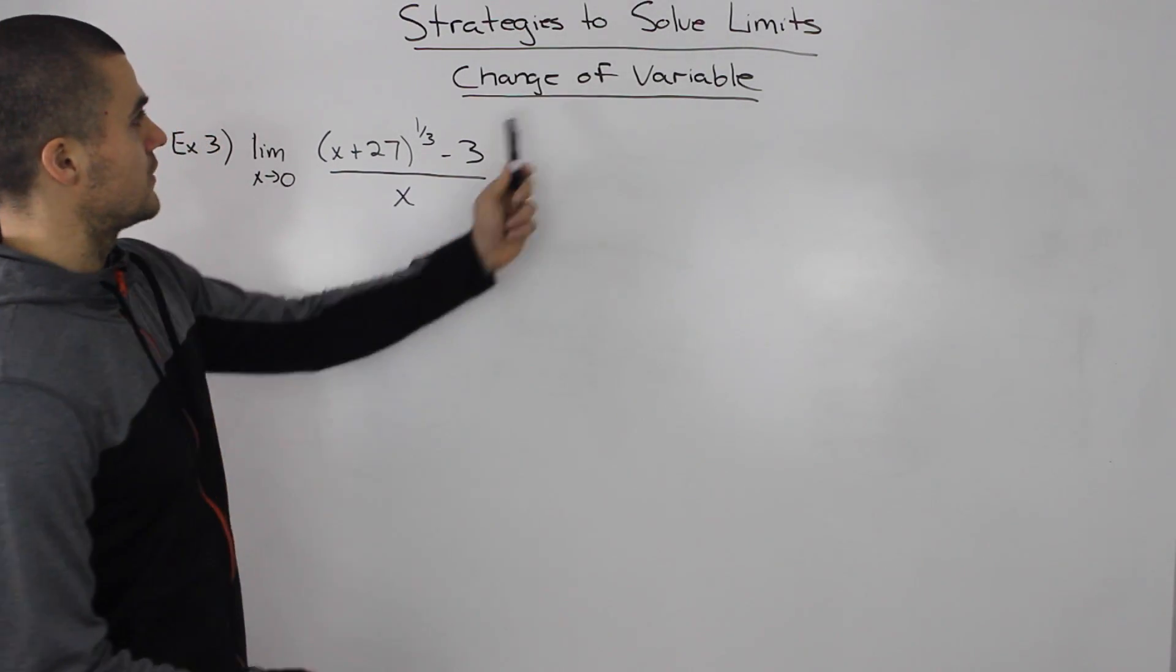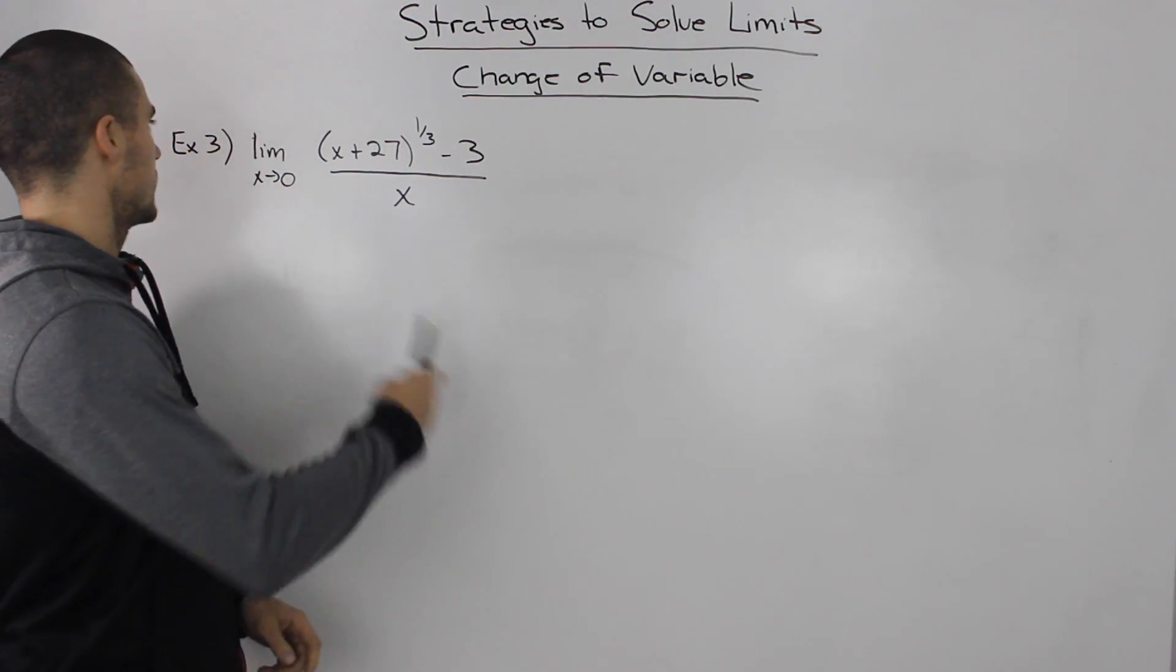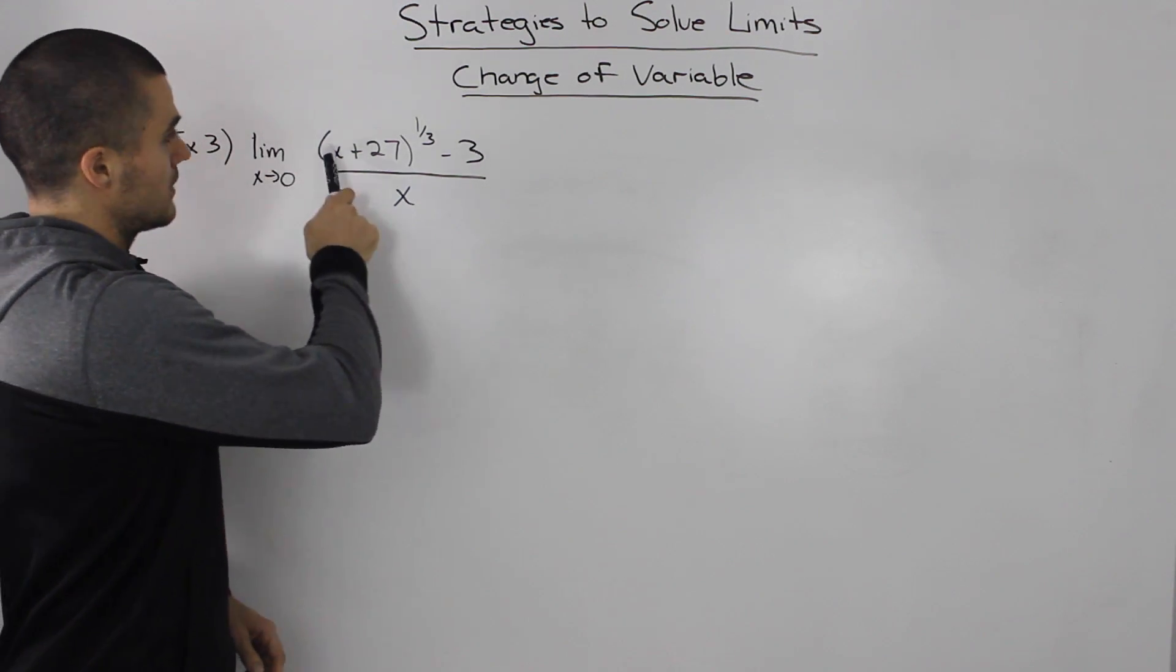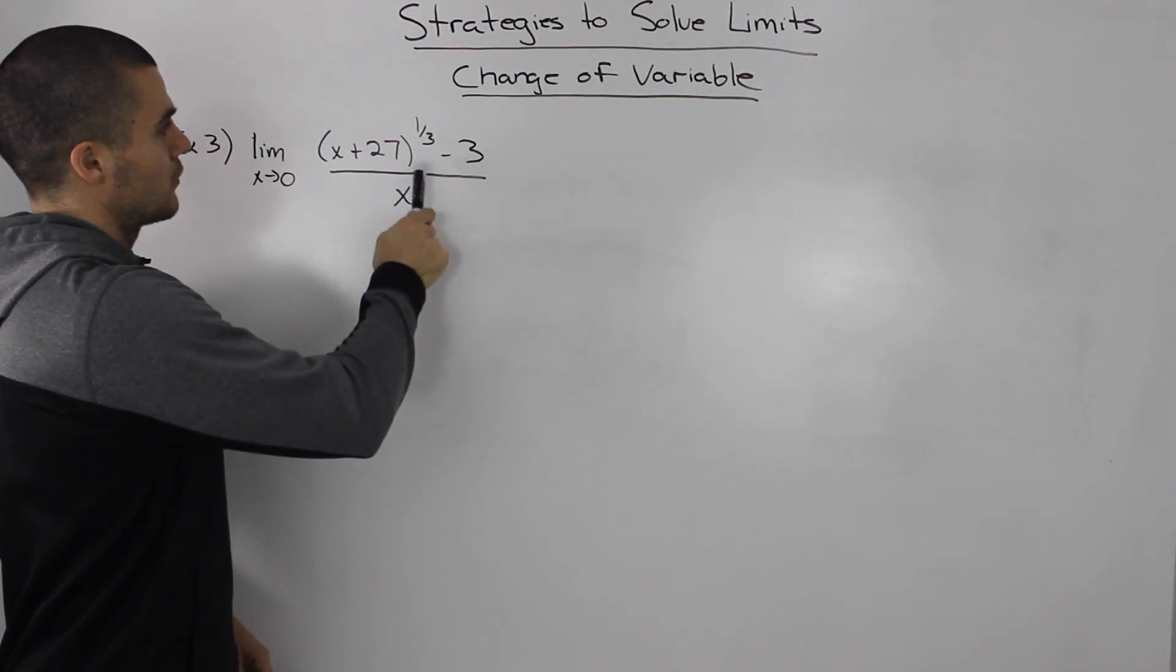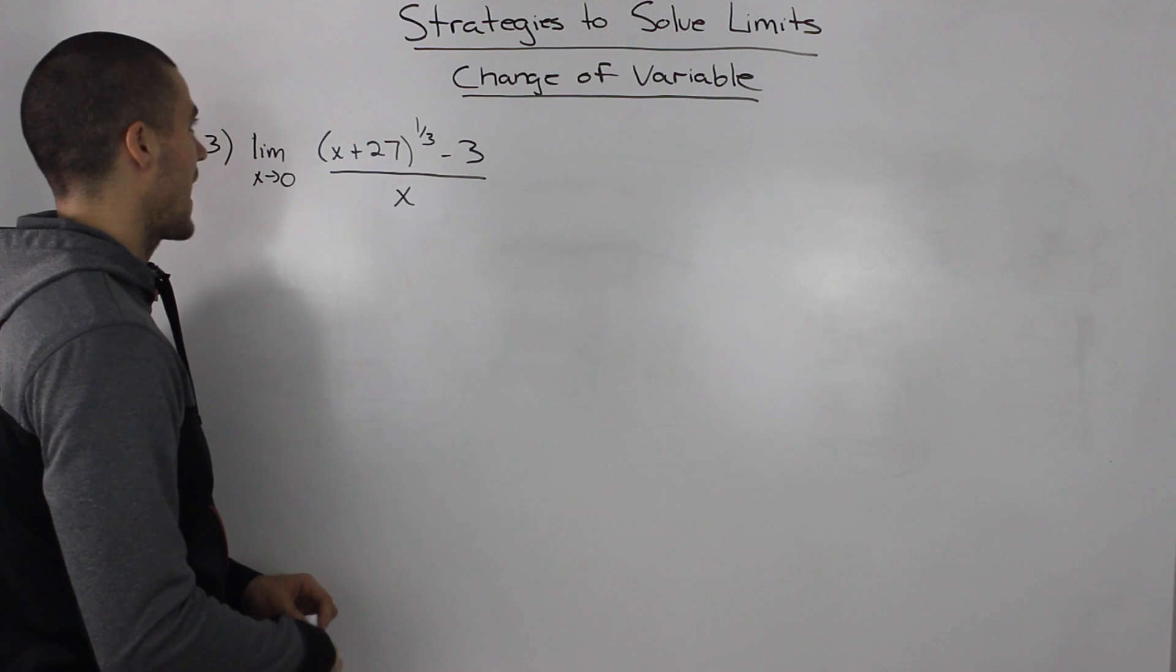Alright, so our third example for the change of variable strategy. We have the limit as x goes to zero of (x+27)^(1/3) minus 3, all over x.